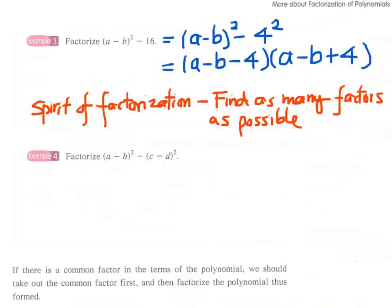Here comes example four: factorize the square of a minus b minus the square of c minus d. We apply the difference of two squares again.